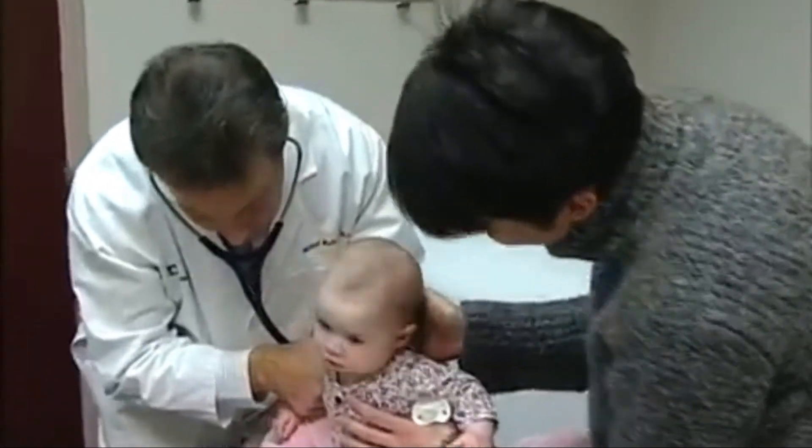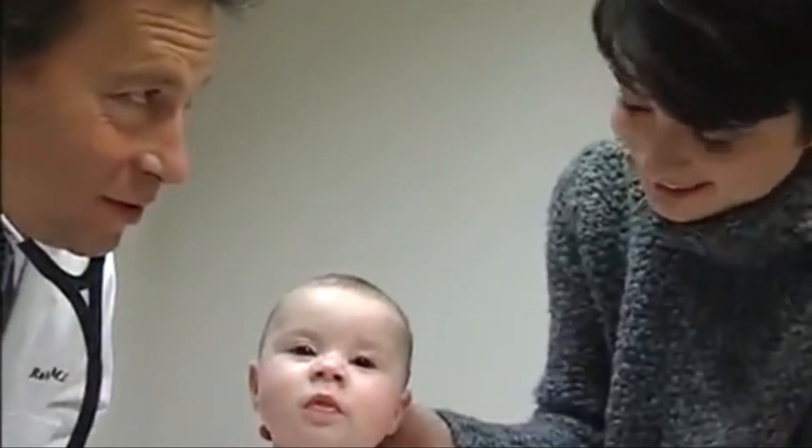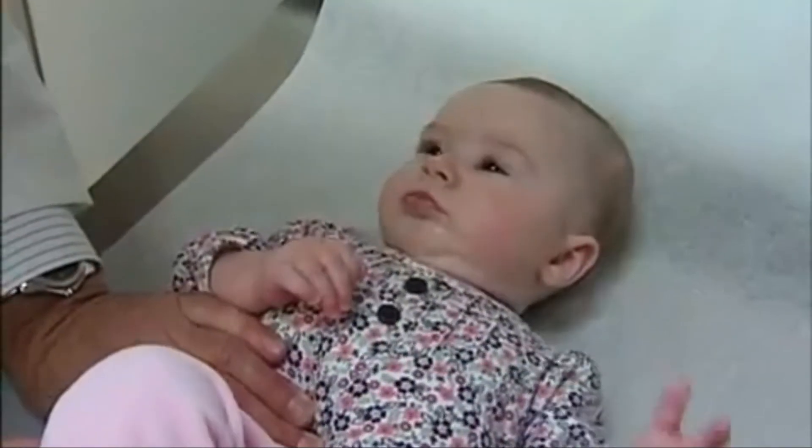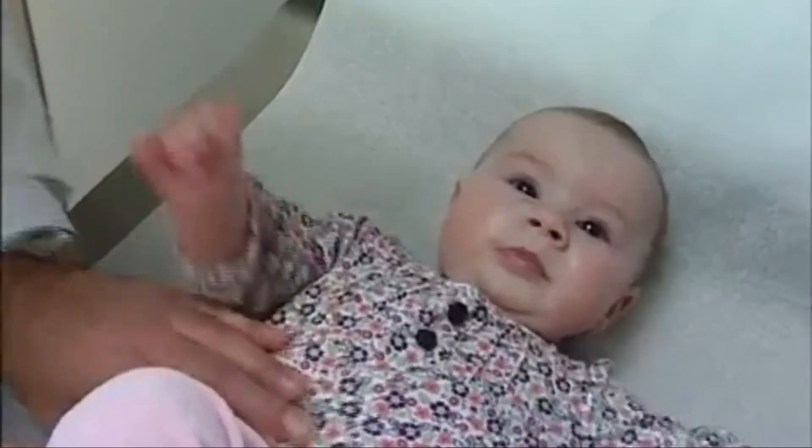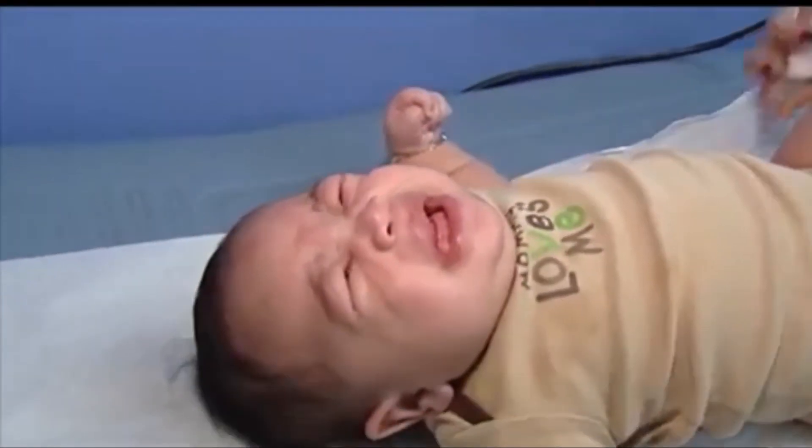The diseases that childhood vaccines are meant to prevent are most likely to occur when a child is very young and the risk of complications is greatest. That makes early vaccination, sometimes beginning shortly after birth, essential. If you postpone vaccines until a child is older, it might be too late.